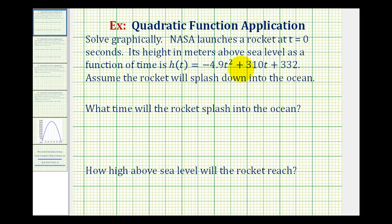We want to solve the following problem graphically using the graphing calculator. NASA launches a rocket at t equals zero seconds. Its height in meters above sea level as a function of time is h(t) equals negative 4.9t squared plus 310t plus 332. Assume the rocket will splash down in the ocean. What time will the rocket splash into the ocean? And how high above sea level will the rocket reach?